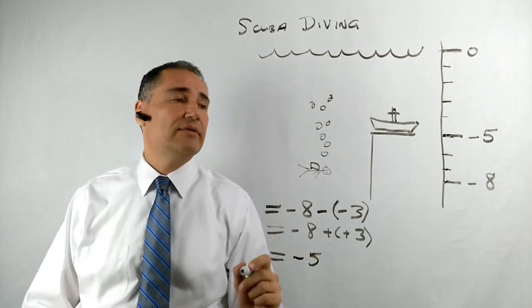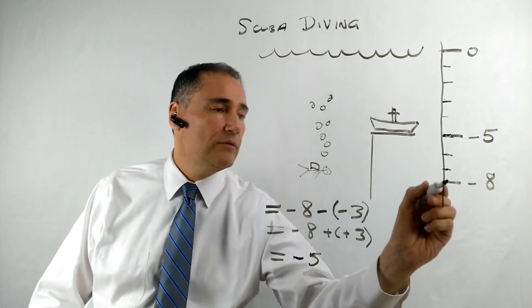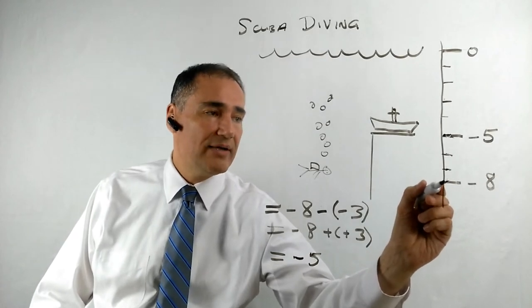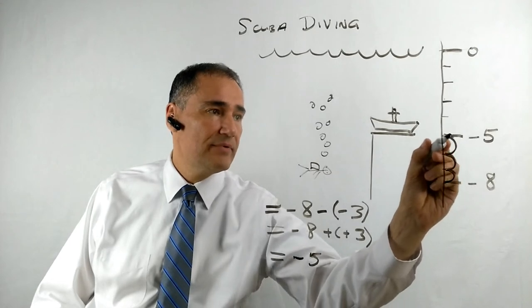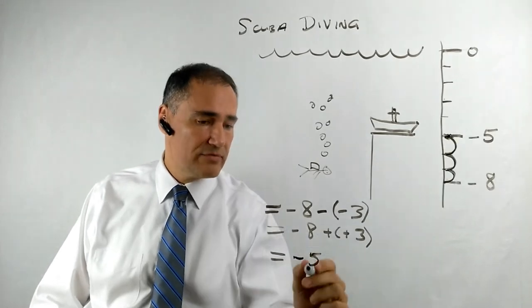What does it look like on the number line? Well, the scuba diver's down eight yards. And he's going to add three yards to get up to minus five, minus five yards.